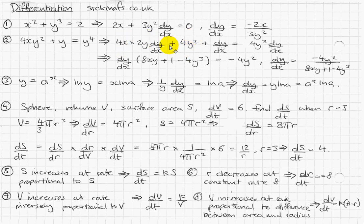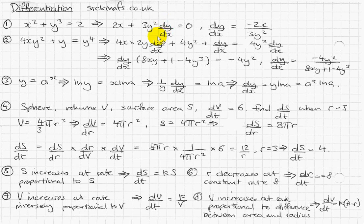So far we've got 4x times 2y · dy/dx plus 4y squared. Now, whenever you differentiate a y with respect to x you stick a dy/dx next to it. So just like differentiating x gives 1, differentiating y gives 1, but because it's a y you stick a dy/dx next to it, so it becomes dy/dx. And then the y cubed term differentiated gives 4y cubed, and again you stick a dy/dx next to it because it's a y.